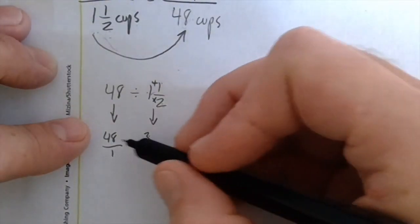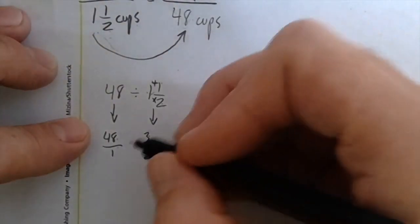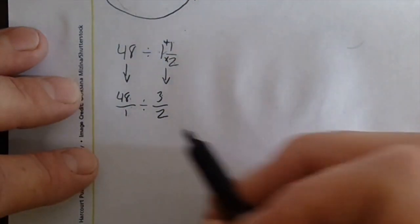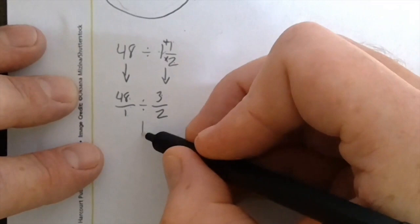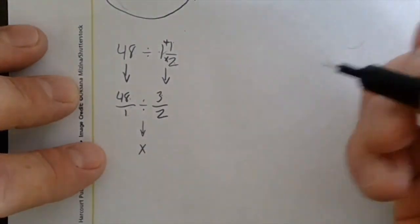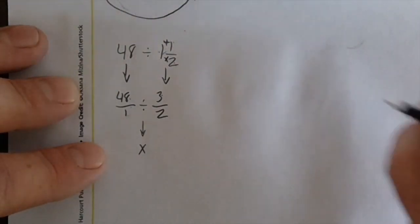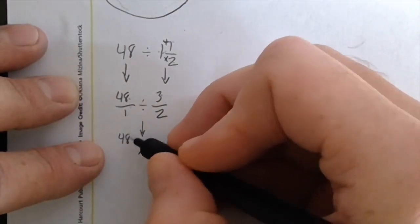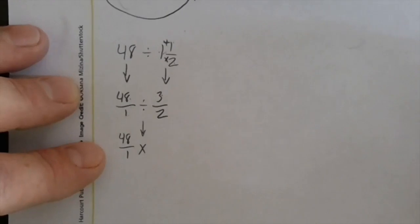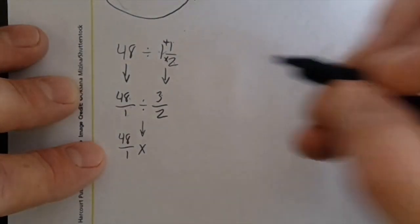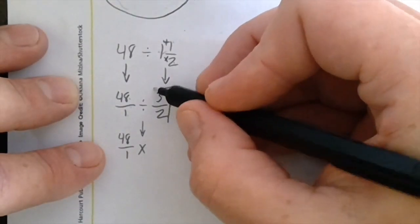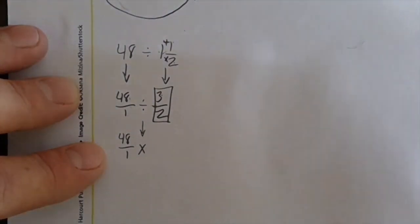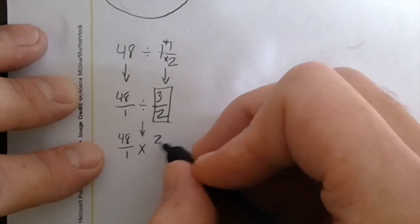So one and one-half is equivalent to 3 halves, and 48 is equivalent to 48 over 1. At this point it's still a division problem, but I'm going to change this into a multiplication problem. Dividing by a fraction is the same as multiplying by its reciprocal. I keep the first number — 48 over 1 — the same, change it to multiplication, and the reciprocal of 3 halves is 2 thirds.